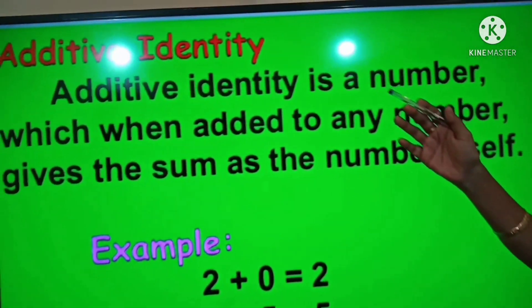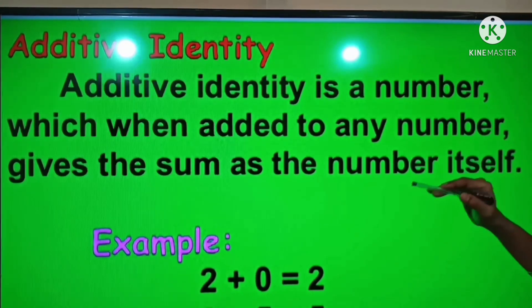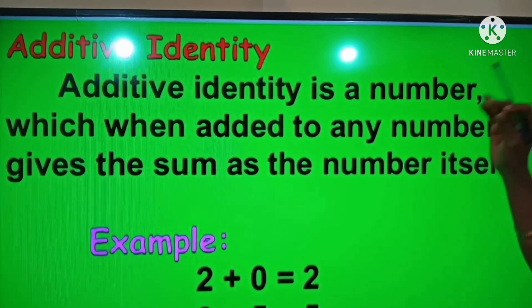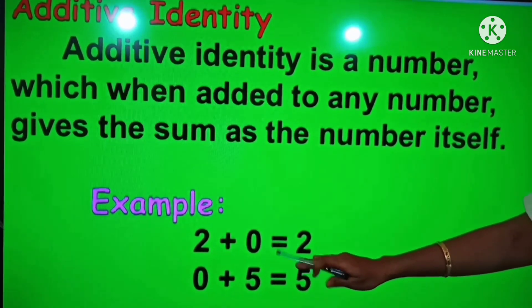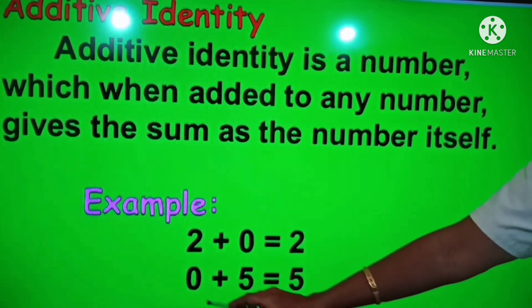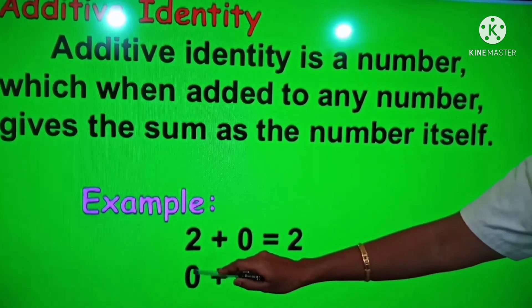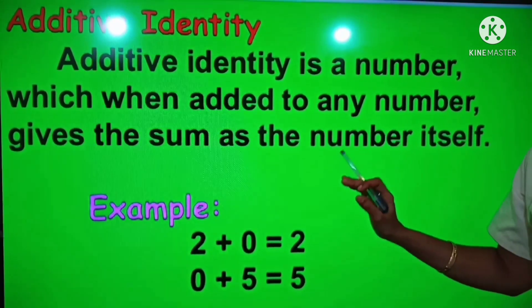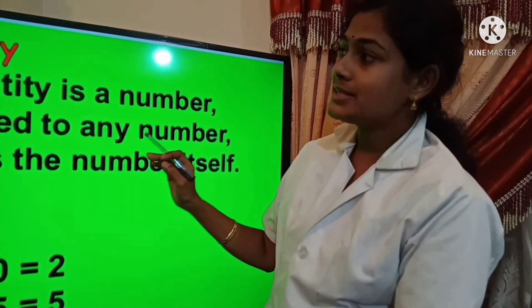Additive identity is a number which, when added to any number, gives the sum as the number itself. That is, when we add any number to the additive identity, we get the same number. For example, 2 plus 0 equals 2, and 0 plus 5 equals 5. So 0 is the additive identity.